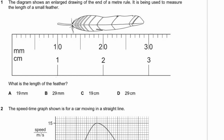Question 1. The diagram shows an enlarged drawing at the end of a metre ruler being used to measure the length of a small feather. What is the length of the feather? It begins at 10mm and goes all the way up to 29mm. So the length will be 29 minus 10mm, which is 19mm — option A.